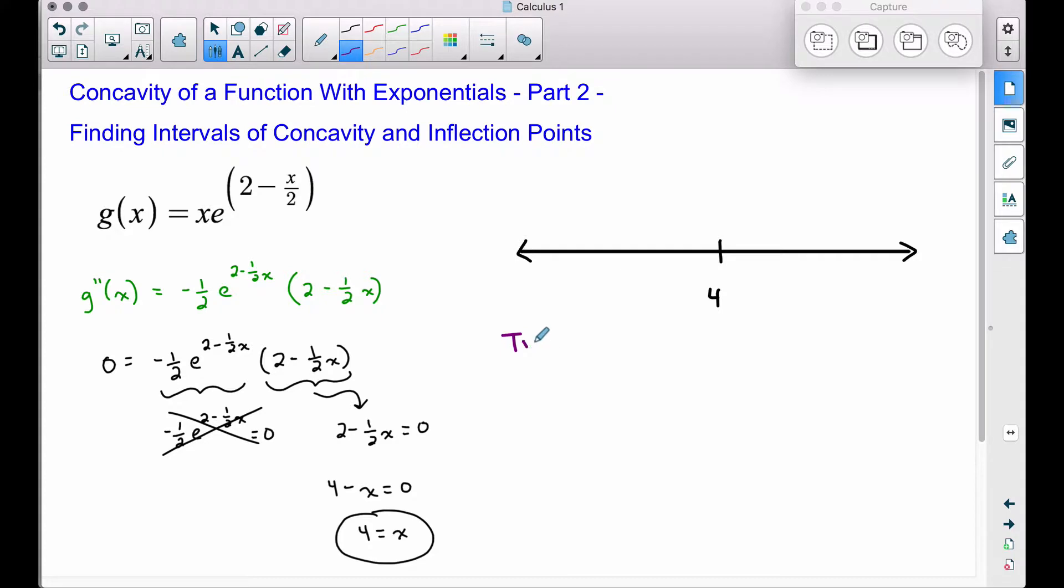Let's pick a test value to the left of four, such as zero. And let's pick a test value to the right of four, such as five. Any value to the left, I just pick zero. Any value to the right, I just pick five.